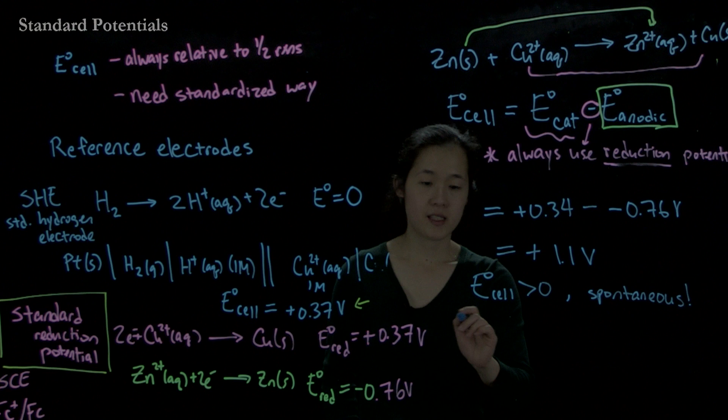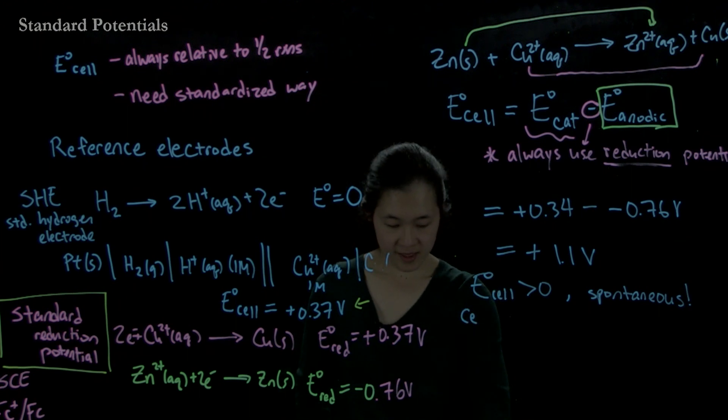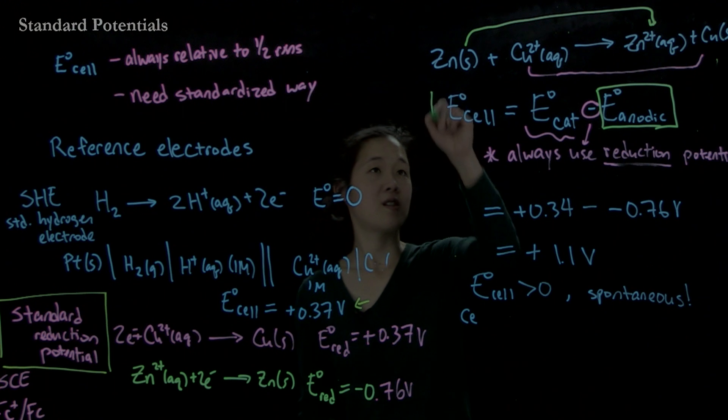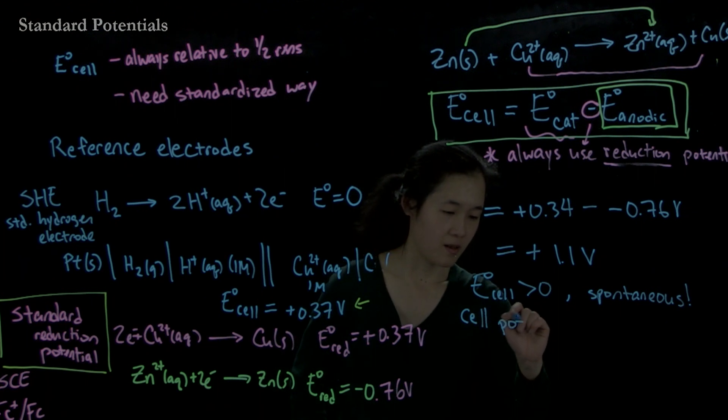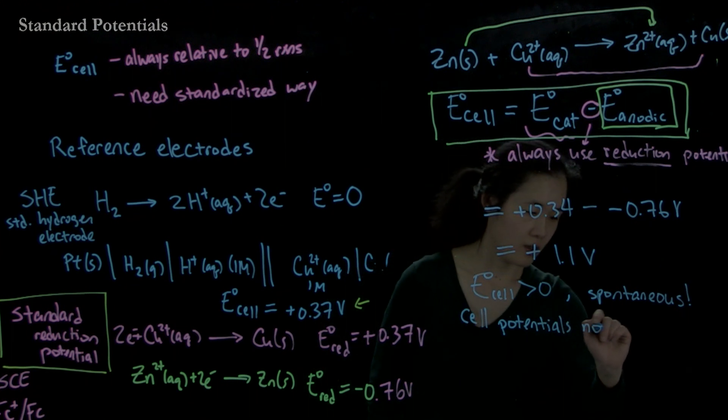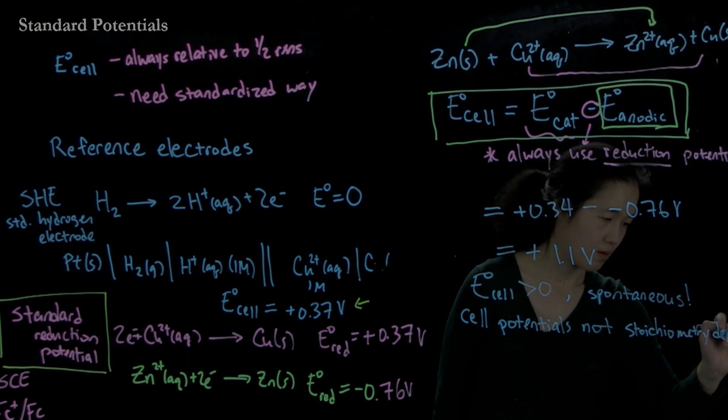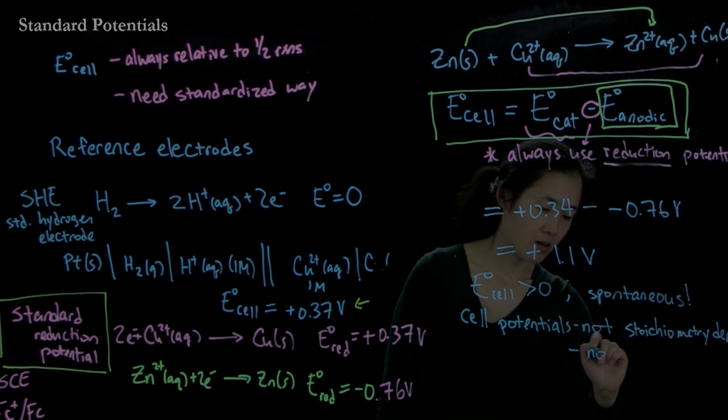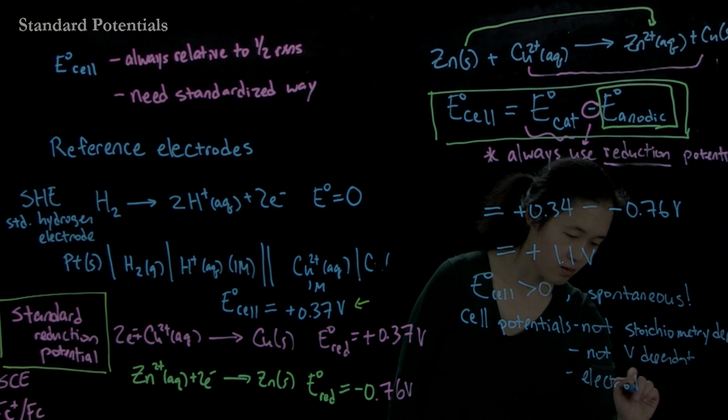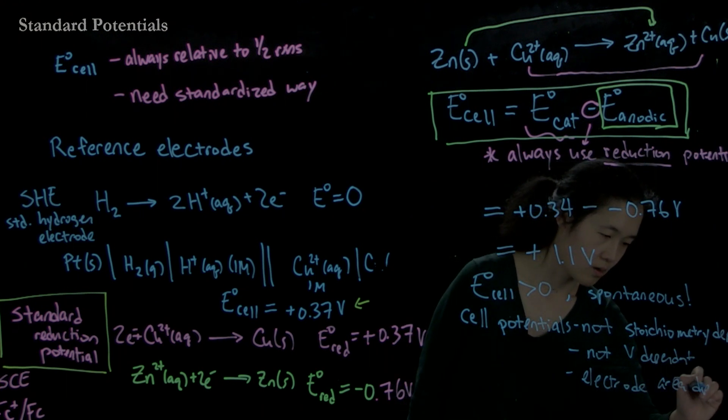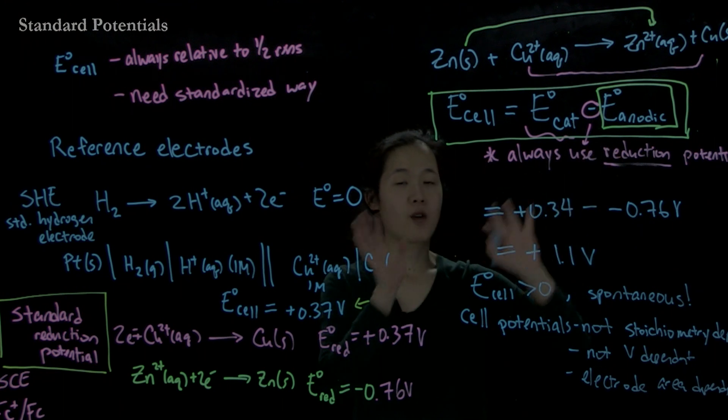One thing to keep in mind is that cell potentials and reduction potentials are not stoichiometry dependent. Let me box this though. I will box this equation. You must know this equation. Cell potentials, not stoichiometry dependent. Not volume dependent. Not electrode area dependent. These are state functions that you just subtract directly without worrying about how many electrons are being transferred.